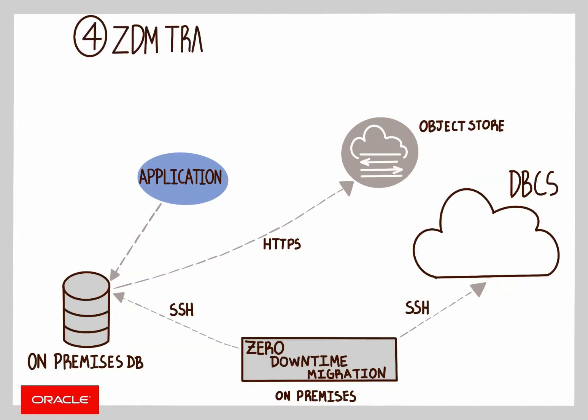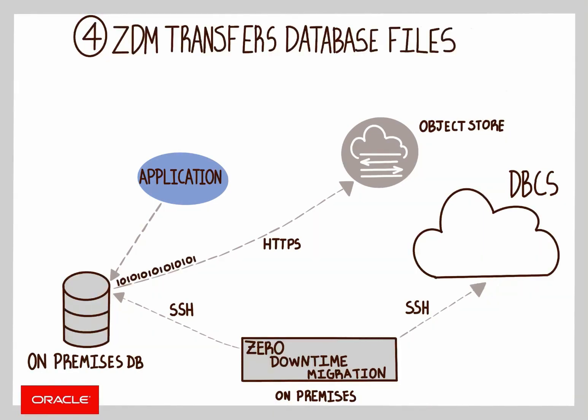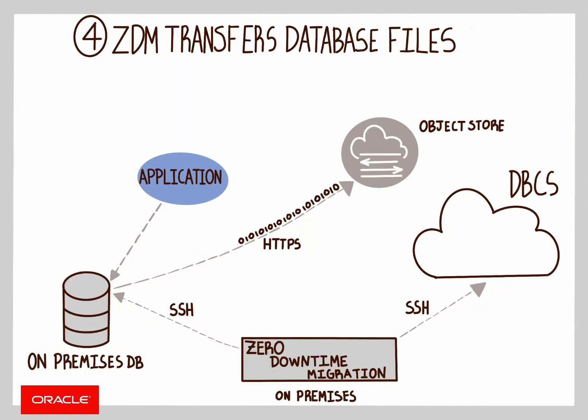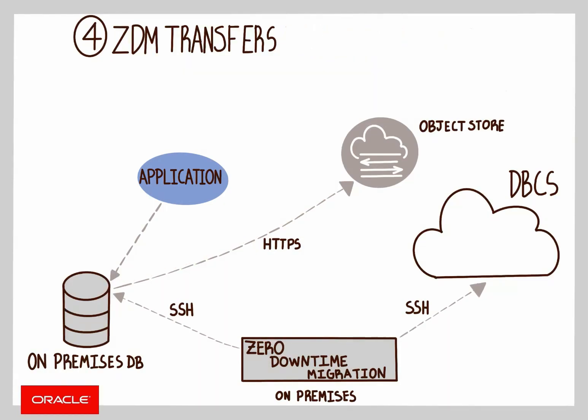Once connectivity has been established, ZDM will transfer files from the source to the object storage. Transferred files include database files, full backup, and incremental archives.